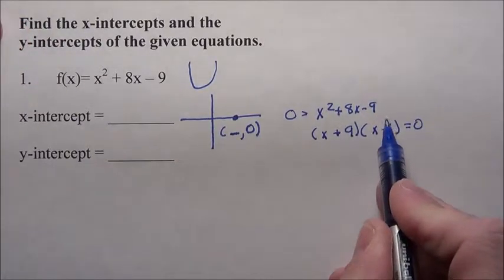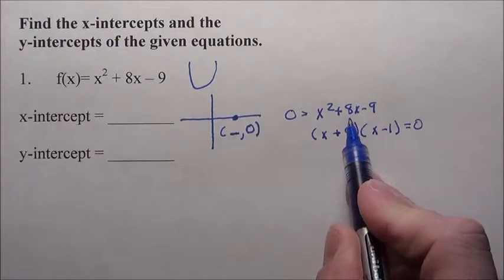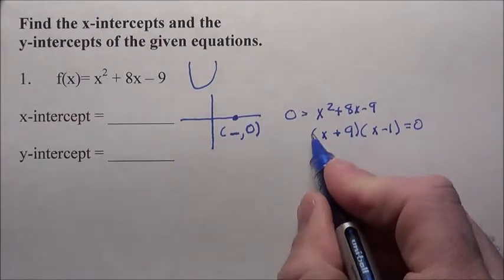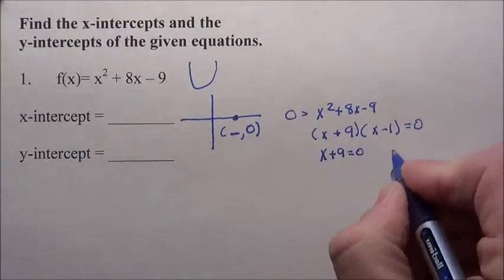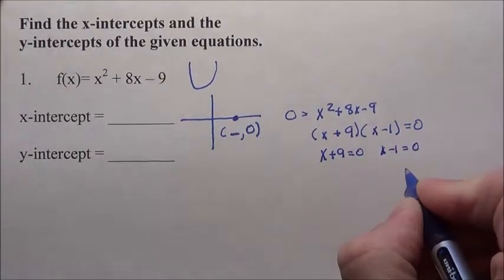Because that will give you 9x, that will give you minus 1x, which gives you plus 8x. So either this piece is zero or this piece is zero. So we know x + 9 has to come out to be zero, or the x - 1.